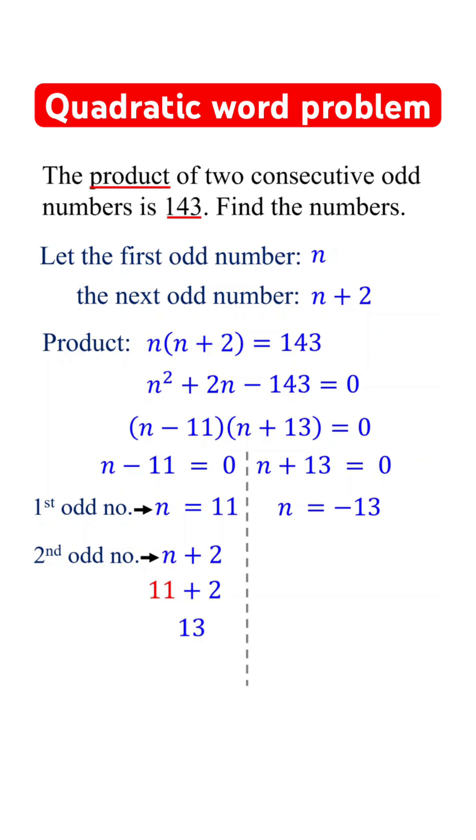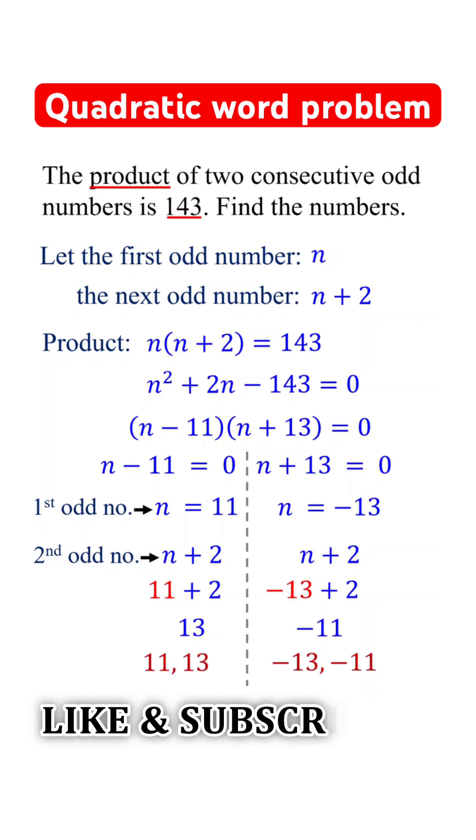When n is negative 13, the next odd number is negative 13 plus 2, which is negative 11. Therefore, this is the answer.